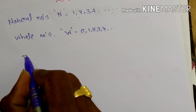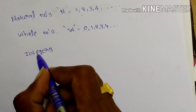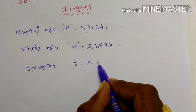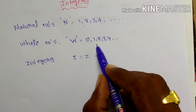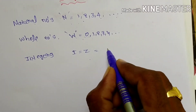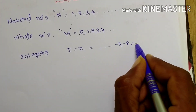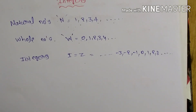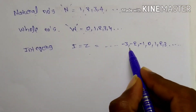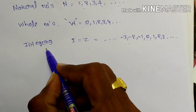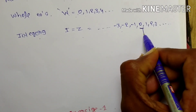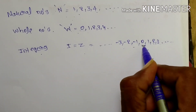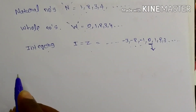Next, integers. Integers can be represented by I or Z. Integers include negative numbers together with the whole numbers — that means minus 3, minus 2, minus 1, 0, 1, 2, 3 and so on. That means integers include positive numbers, negative numbers, and 0. You have to remember: 0 is neither positive nor negative.